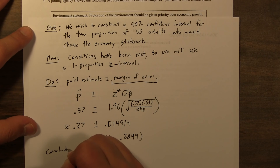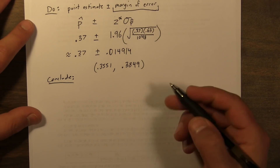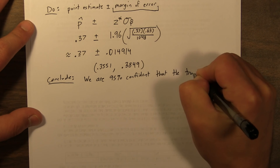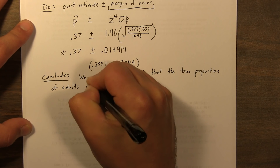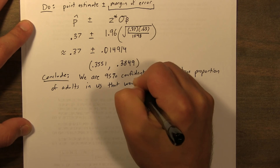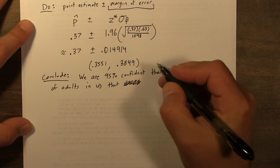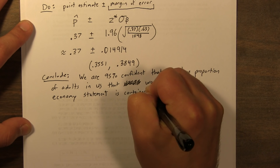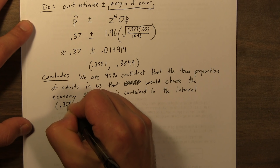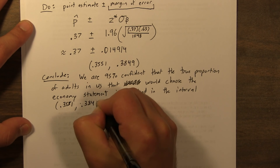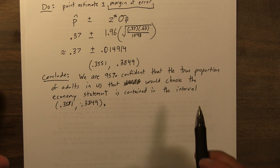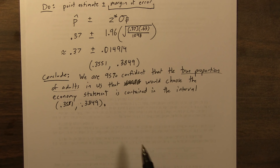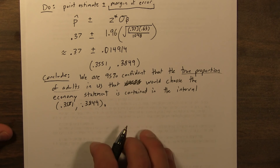For the conclude step, we interpret the confidence interval: we are 95% confident that the true proportion of adults in the U.S. who would choose the economy statement is contained in the interval (0.3551, 0.3849). Importantly, our interpretation refers to the parameter — the true proportion of adults — not the sample proportion. And it's in context. That satisfies part A.